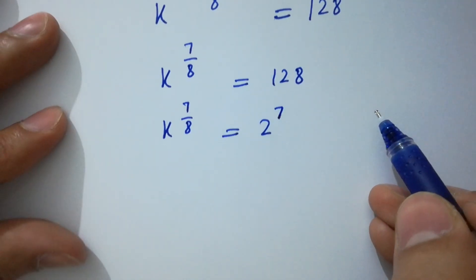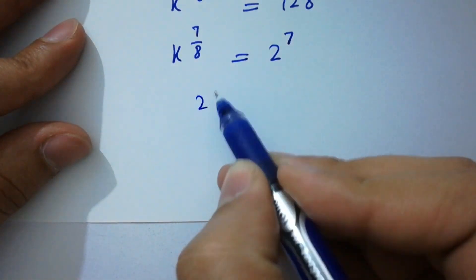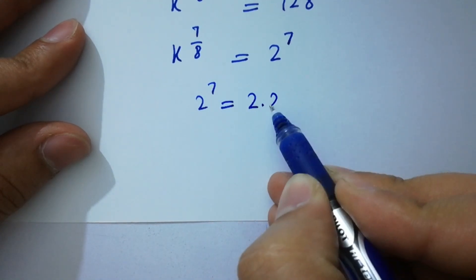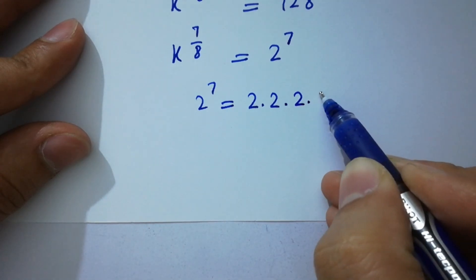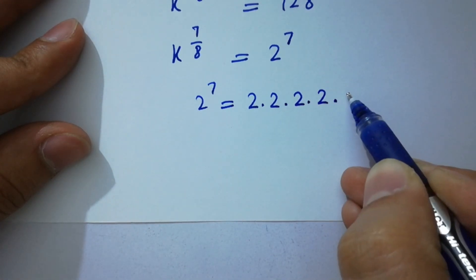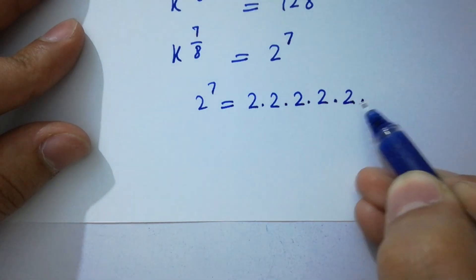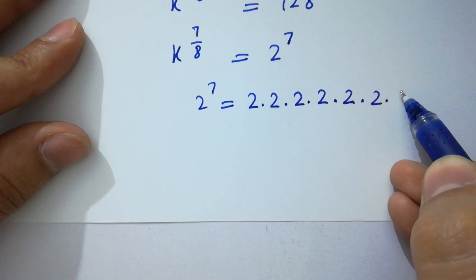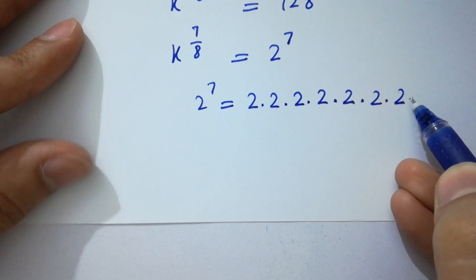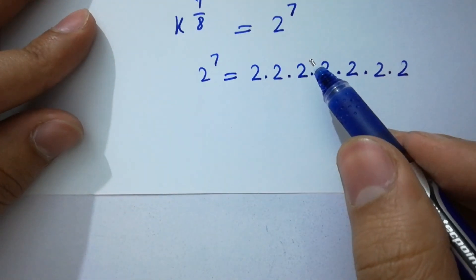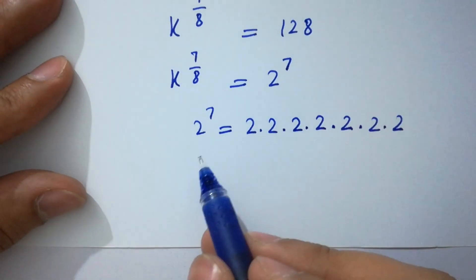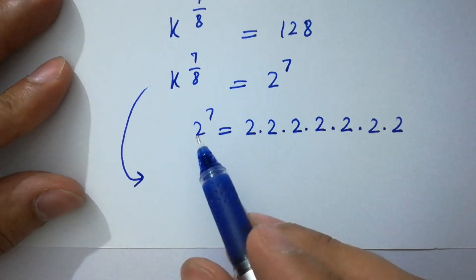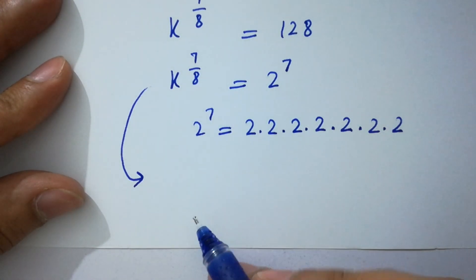128 is 2 to the power 7, as we know: 2 times 2 is 4, 4 times 2 is 8, 8 times 2 is 16, 16 times 2 is 32, 32 times 2 is 64, 64 times 2 is 128. So k to the power 7 over 8 equals 2 to the power 7.